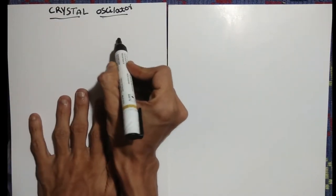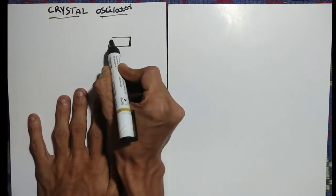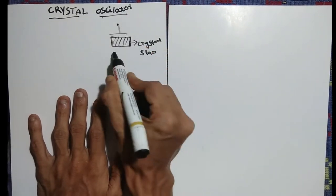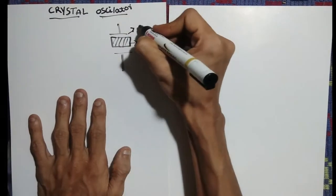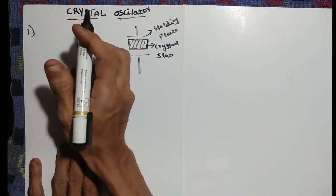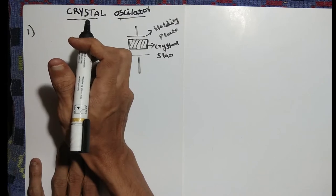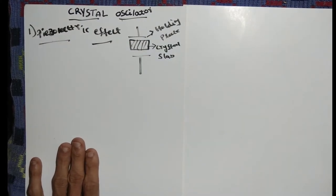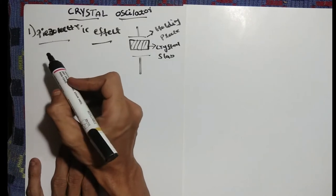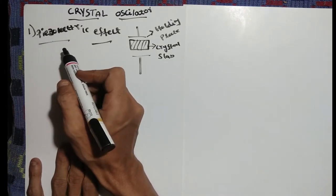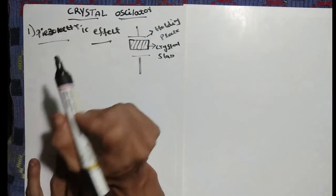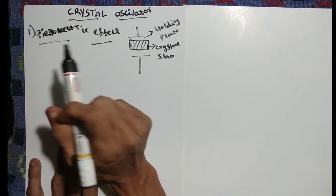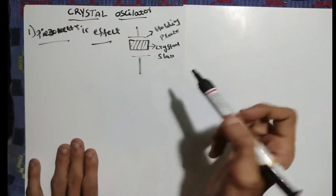Next we discuss crystal oscillators. A crystal oscillator looks like a crystal slab with holding plates. Crystal oscillators are not naturally made, nor manufactured synthetically — they actually exhibit the piezoelectric effect. Under the influence of mechanical pressure, the crystal vibrates and a voltage gets generated across the opposite faces. When subjected to AC voltage, it vibrates causing mechanical distortion in the crystal shape.